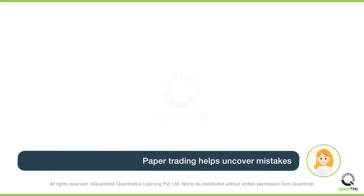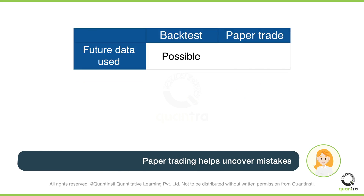Paper trading can also help uncover any inadvertent mistakes in backtesting. For example, if your strategy uses a data point in the future to make trading decisions, it will not get noticed in backtesting. Such things won't be possible in paper trading.